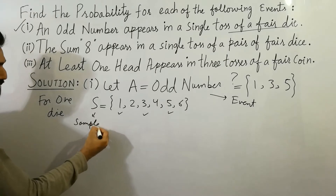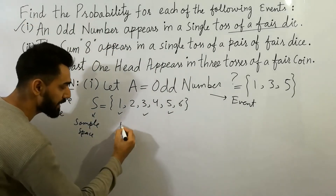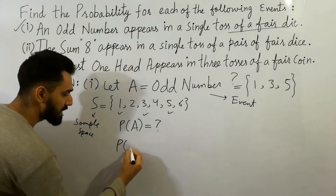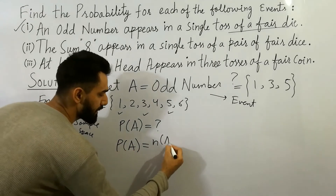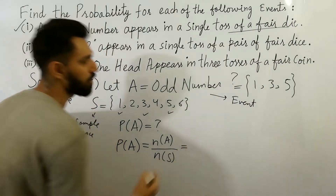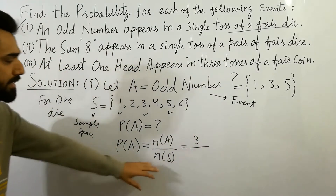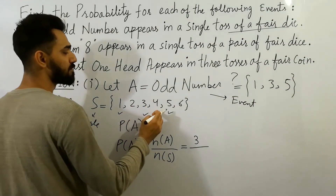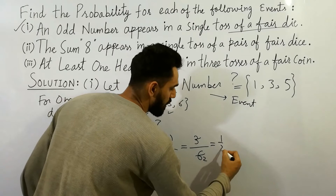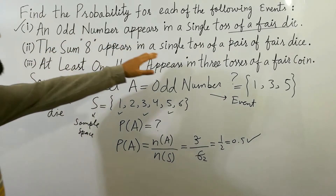Now, the question is to find the probability of A. We know that probability of A is equal to the number in event A divided by the number in sample space. You can count: one, two, three — so the number in A is three. The sample space has one, two, three, four, five, six — six numbers in total. So probability of A equals three divided by six, which simplifies to one divided by two, equal to 0.5. That is the probability of A if an odd number appears in a single toss of a die.